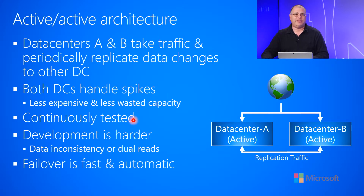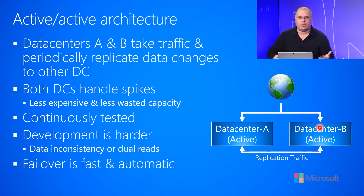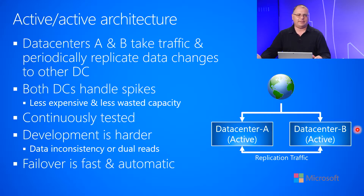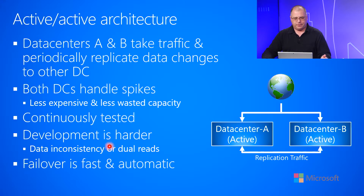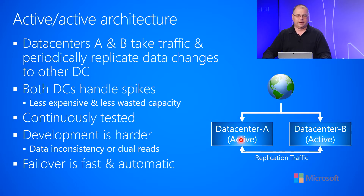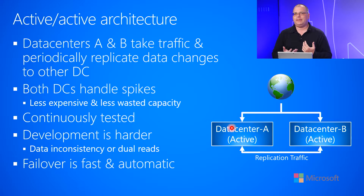With this model you're also continuously testing it, because some traffic is going to A and some to B — you always know both data centers are up and working correctly. The only thing you'd have to test is if one goes down, all traffic goes to the other. However, development is a little harder because you may have data inconsistencies. Some requests might go to data center B and update some data, and there's a lag before that gets replicated to A. If during that lag a request comes into A to read that data, the change may not be there yet, returning stale data to the caller.